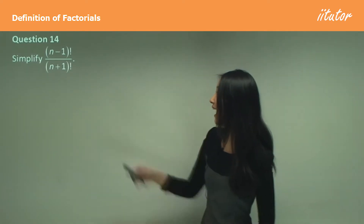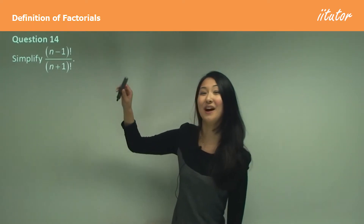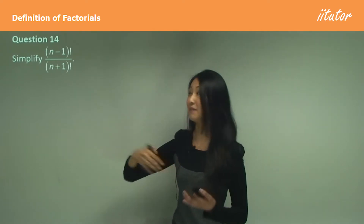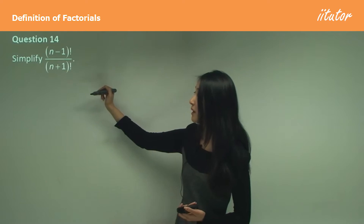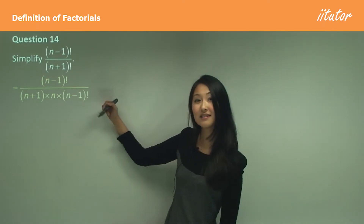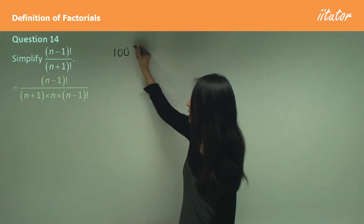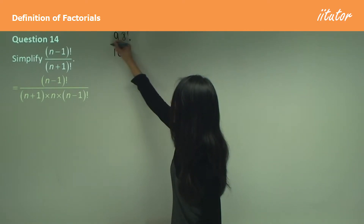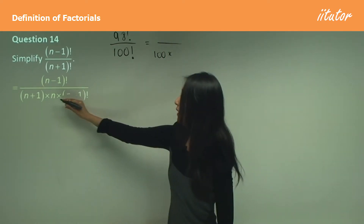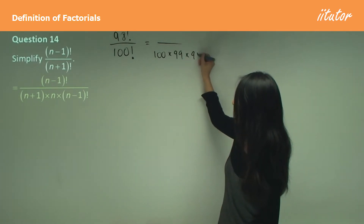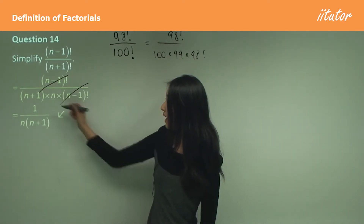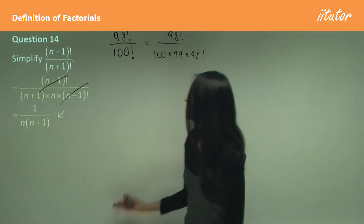Question 14: simplify (n−1) factorial over (n+1) factorial. We need to make the denominator contain (n−1) factorial. Starting from (n+1) factorial, subtract 1 to get n factorial, subtract another 1 to get (n−1) factorial. So (n+1) factorial equals (n+1) × n × (n−1) factorial. Cancel the (n−1) factorials, leaving 1 over n(n+1).